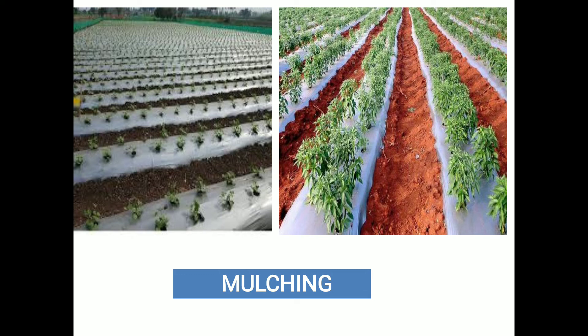Next is mulching. With the help of mulch we can reduce soil-borne pest and pathogen populations along with weed control. Mulching reduces the intensity of soil-borne pathogens — for example, Rhizoctonia that causes root rot, or Fusarium oxysporum that causes wilt disease.